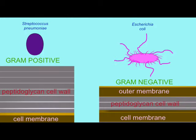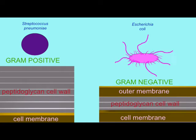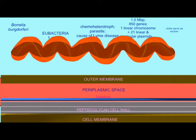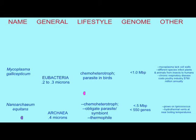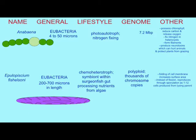Prokaryotes vary a great deal. Bacteria vary in size — some are even big enough to see without a microscope. Bacteria vary in structure: they can be rod-shaped, round, spiral, and even square, among other structures.